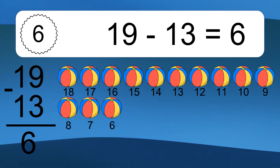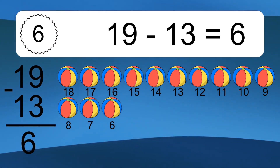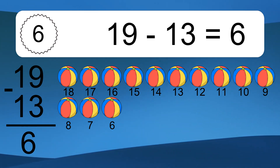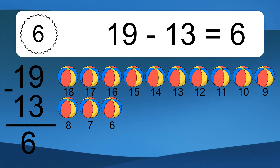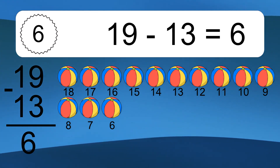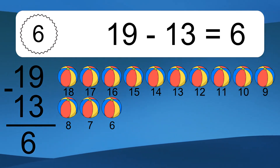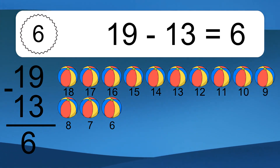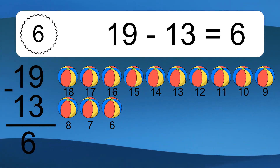19 minus 13 equals 6. Let's count it: 18, 17, 16, 15, 14, 13, 12, 11, 10, 9, 8, 7, 6.